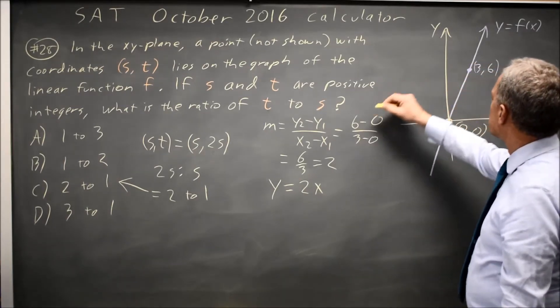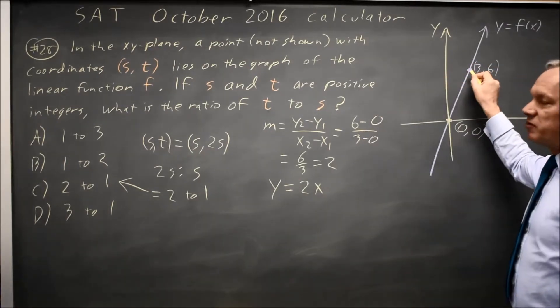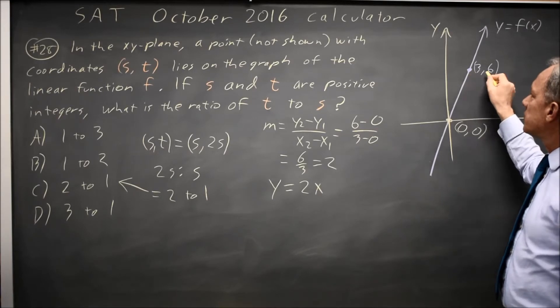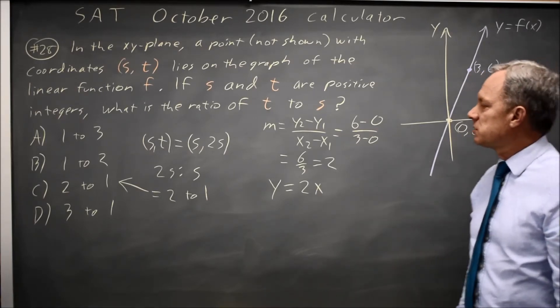You could also have reasoned: a point very close to (3, 6) would have a ratio very close to 6 to 3, which is 2 to 1.